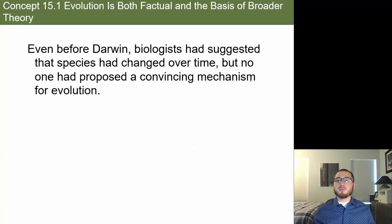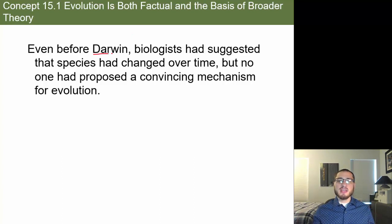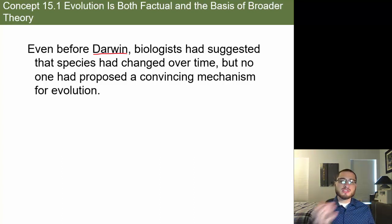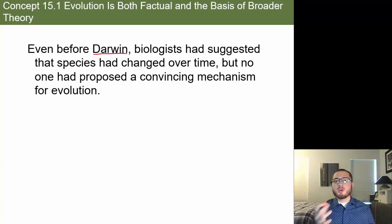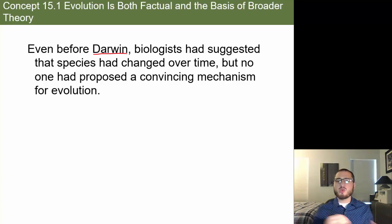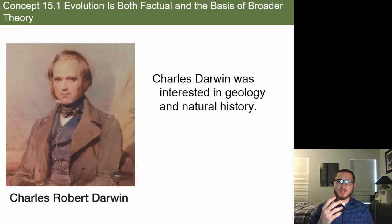Even before Darwin, biologists had suggested that species changed over time, but no one had proposed a convincing mechanism for evolution. Darwin didn't completely originate the idea that things change over time, but he was the one who came up with a thorough explanation of the specifics — why they change, when they change, what's going on.